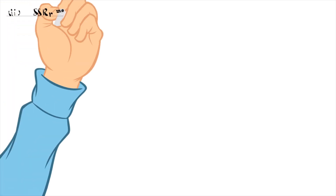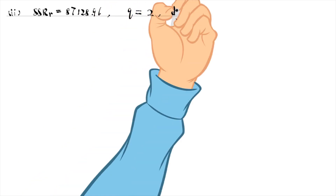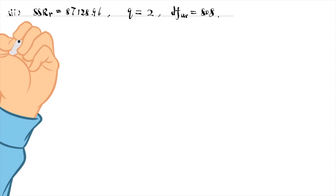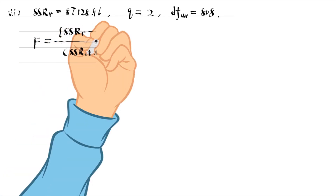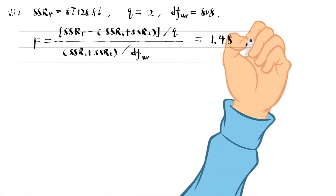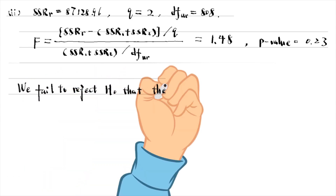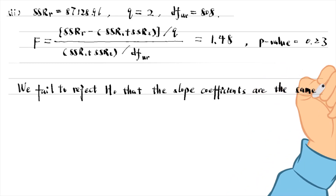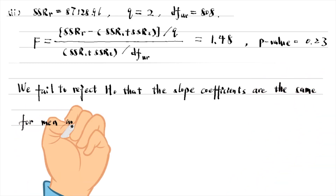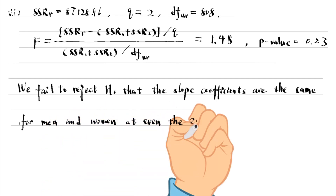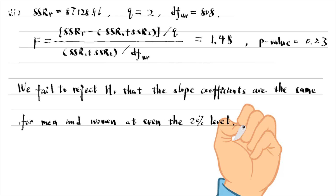For part 2, we test for the difference in the slope coefficients between men and women. The restricted model is the third model, because the slope coefficients are restricted to be identical for men and women in that model. The number of restrictions is 2 for the interaction terms. Using the Chow statistic, we obtain the F statistic of 1.48 and its p-value is 0.23. We fail to reject the null hypothesis that the slope coefficients are the same for men and women at even the 20% level. In other words, once we allow the difference in the intercept between men and women, there is no significant difference in the slope coefficients.